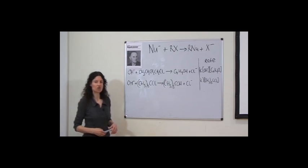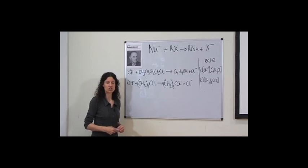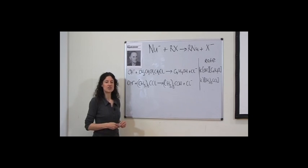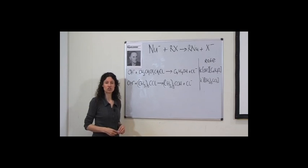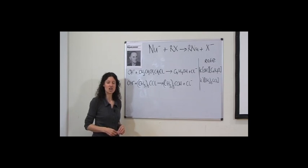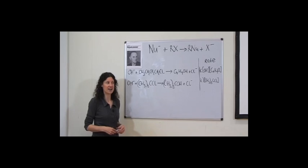An overall chemical reaction can take place via a series of steps. The kinetics of the reaction — the rates of changes of the chemical species involved — can give us an indication of how the process takes place on a molecular scale, i.e. the reaction mechanism.